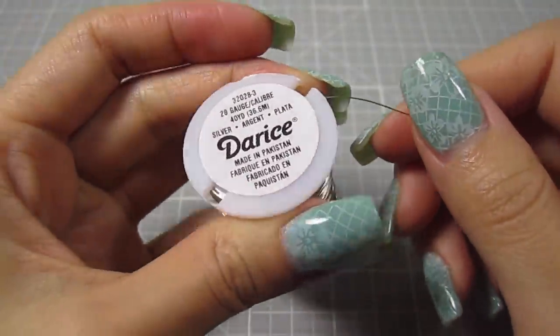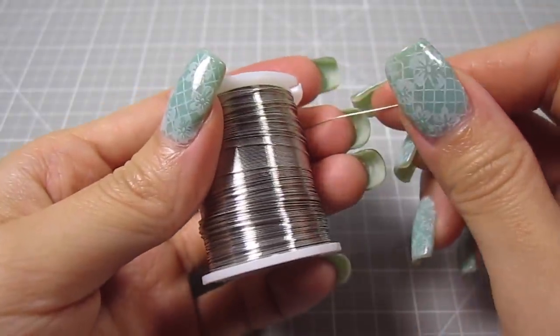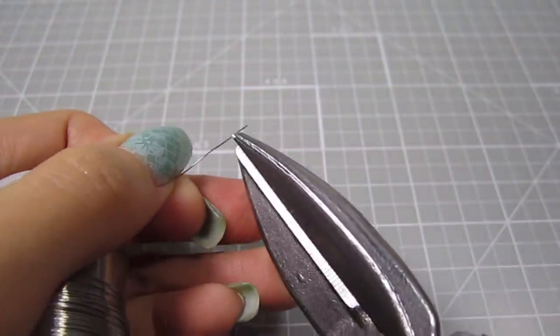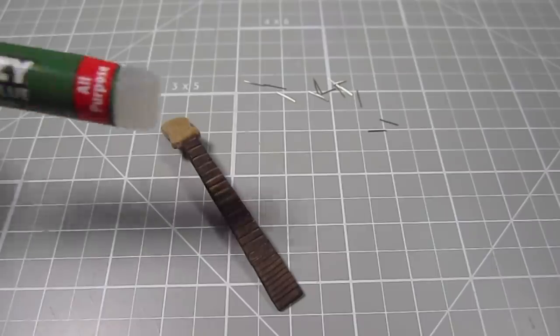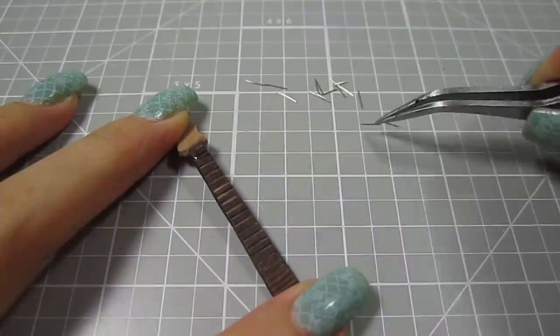For the frets, I'm using some super thin wire. This is 28 gauge jewelry wire. With some metal shears, I snip off a bunch of little pieces. Then with super glue, glue each wire piece into those little slots.